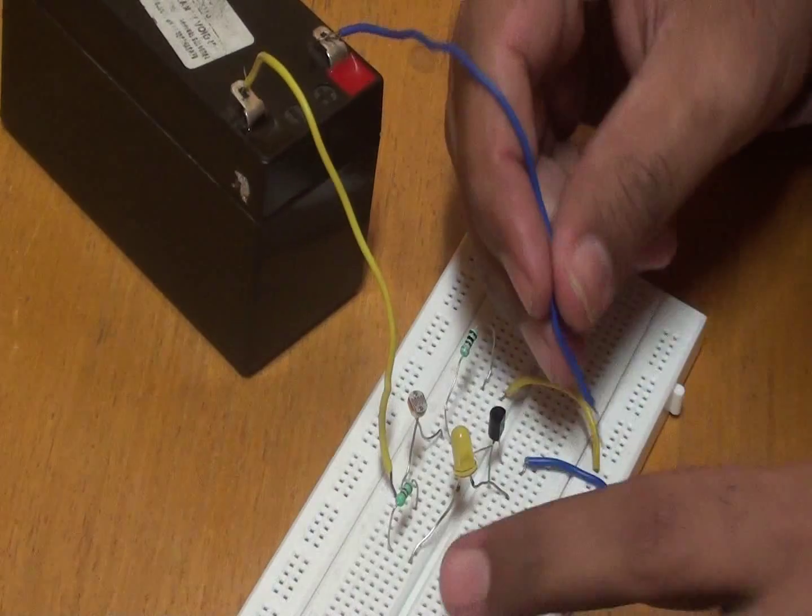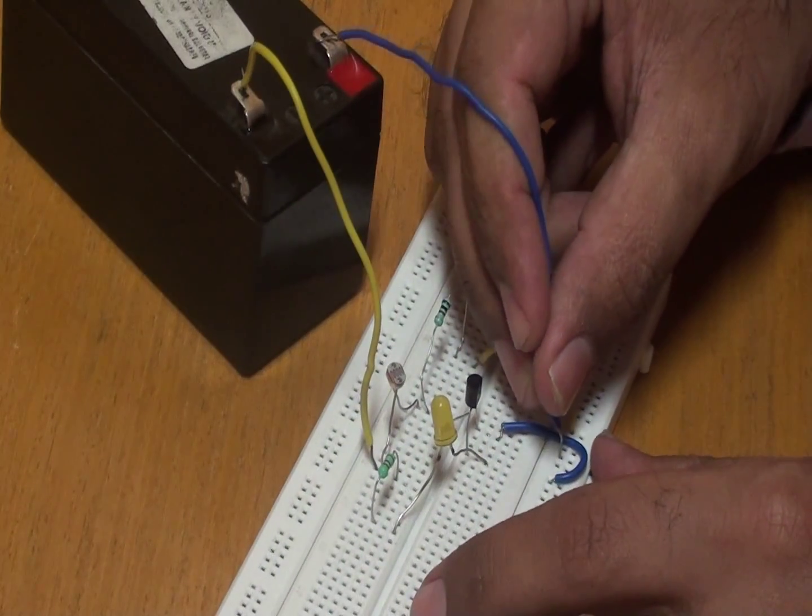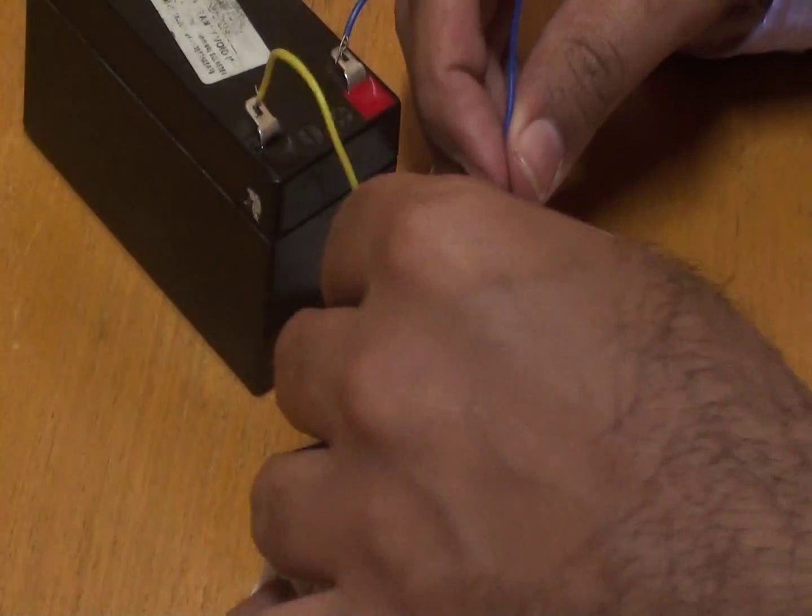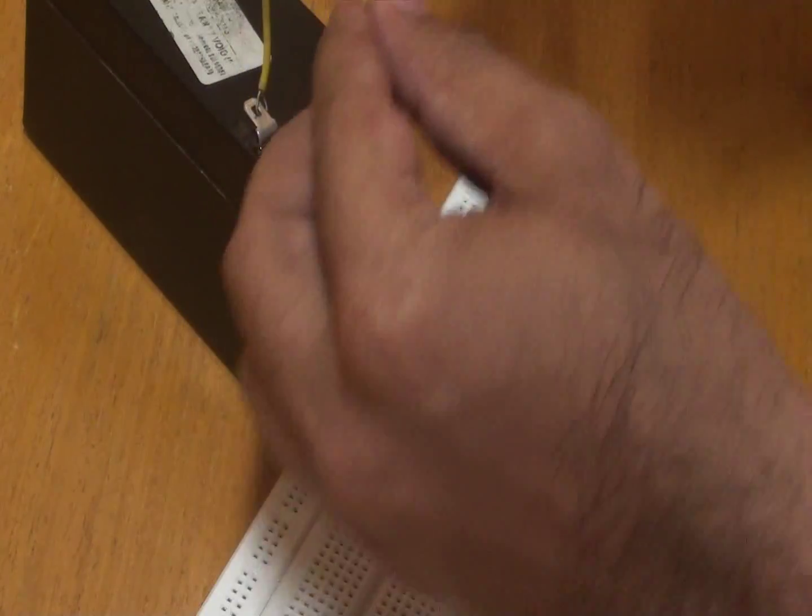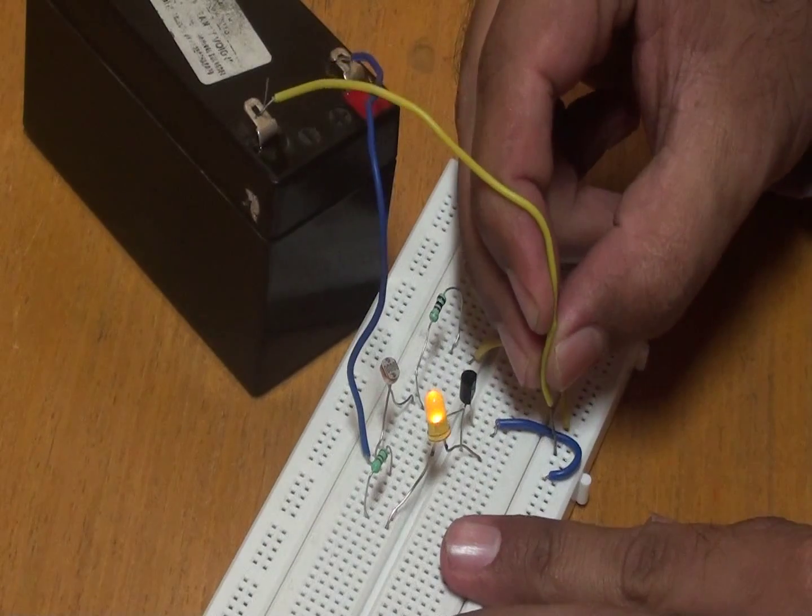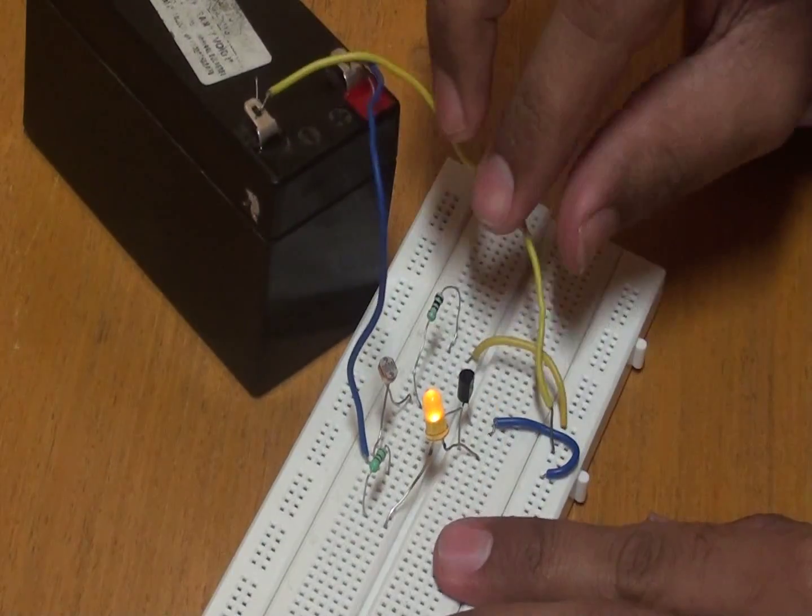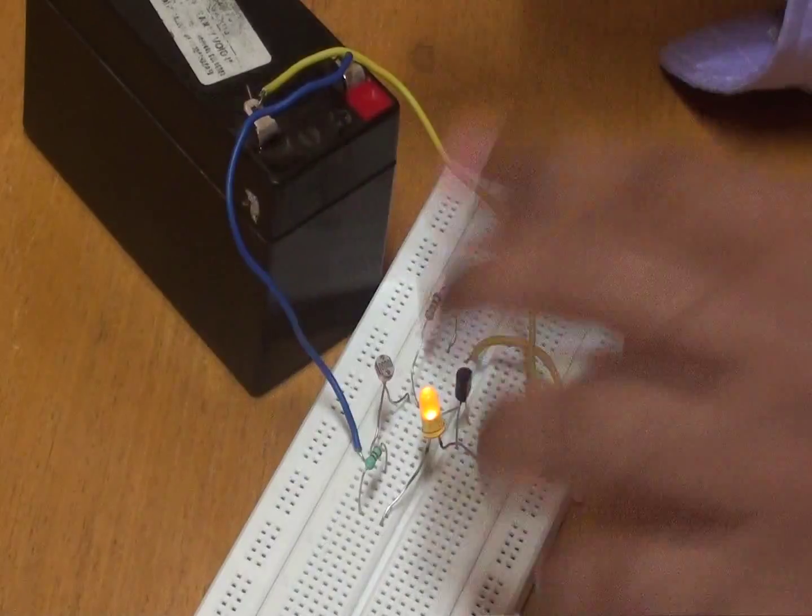So the positive supply is given here and the negative. So now we can see this LED blinking now.